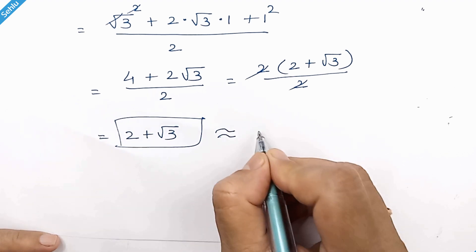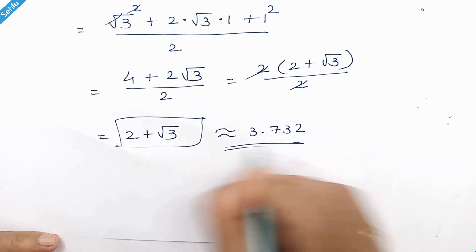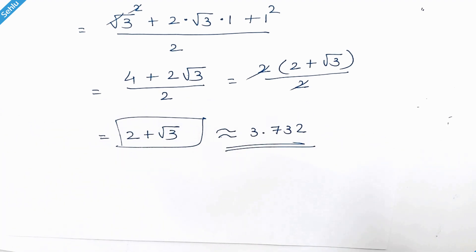And the decimal approximation is 3.732. That's it, thanks for watching, don't forget to subscribe, see you in the next one, bye bye.